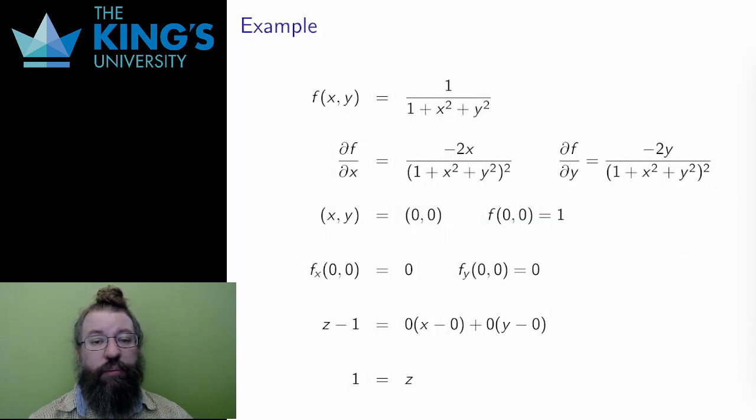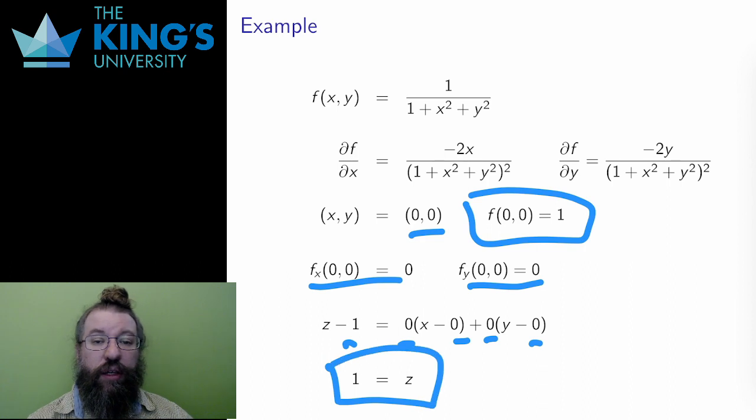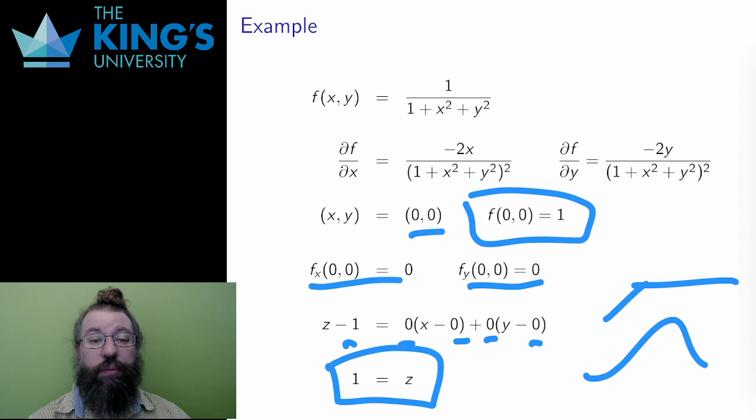Here's the same function, but at the point (0, 0, 1). I have the same steps. The partials, evaluate the partials at the point, put into the form of the equation of the tangent plane, and then simplify if I wish. The result here is that the tangent plane is the horizontal plane z = 1. That makes sense. In the graph, the point (0, 0, 1) was at the top of a hill. And the tangent plane at the very top should be a horizontal plane.